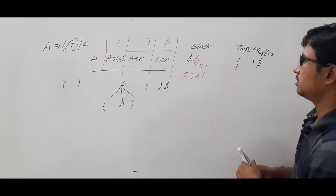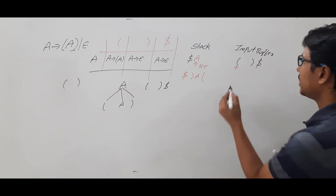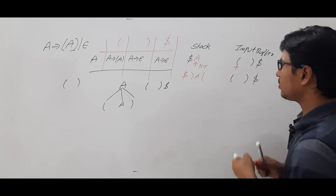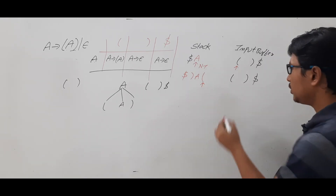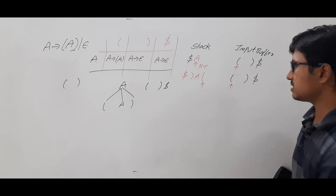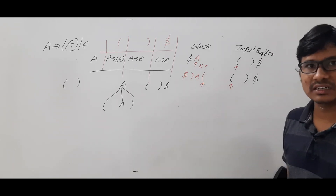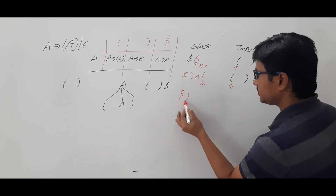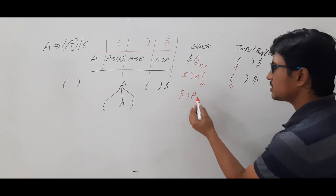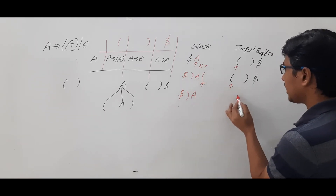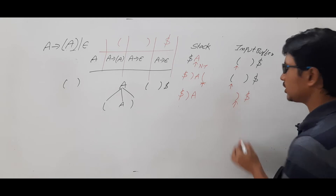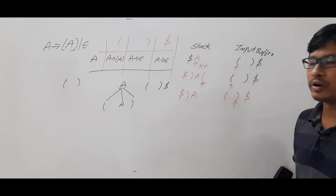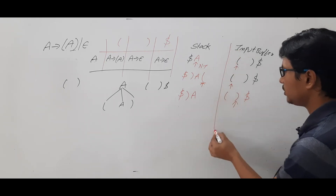The stack now has: open braces, A, closed braces, dollar. The input pointer is also pointing to open braces — there is a match. When there is a match, pop open braces from the stack and advance the input pointer. Now the input pointer is pointing to closed braces.